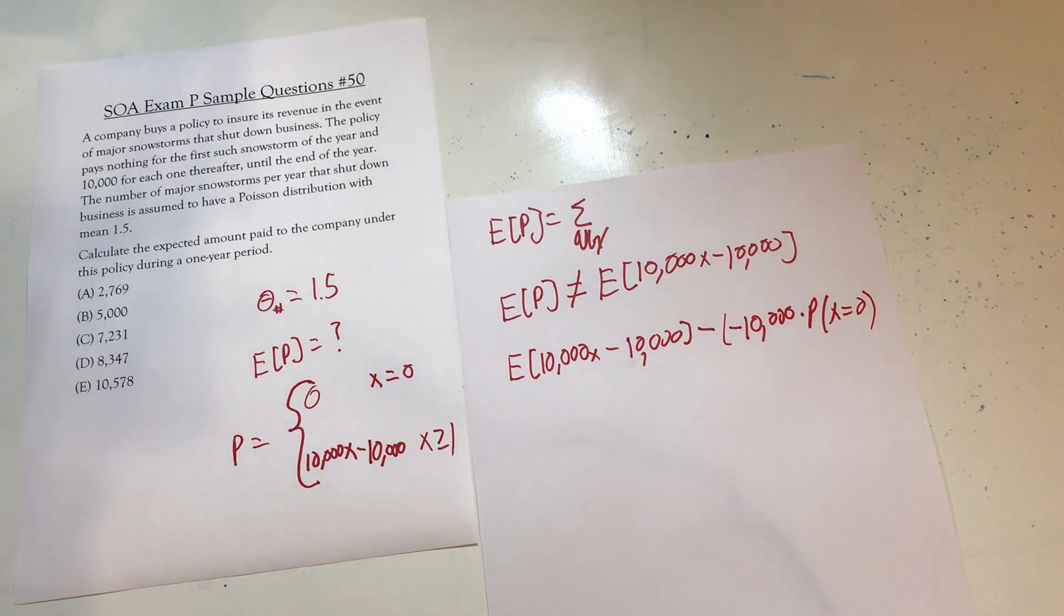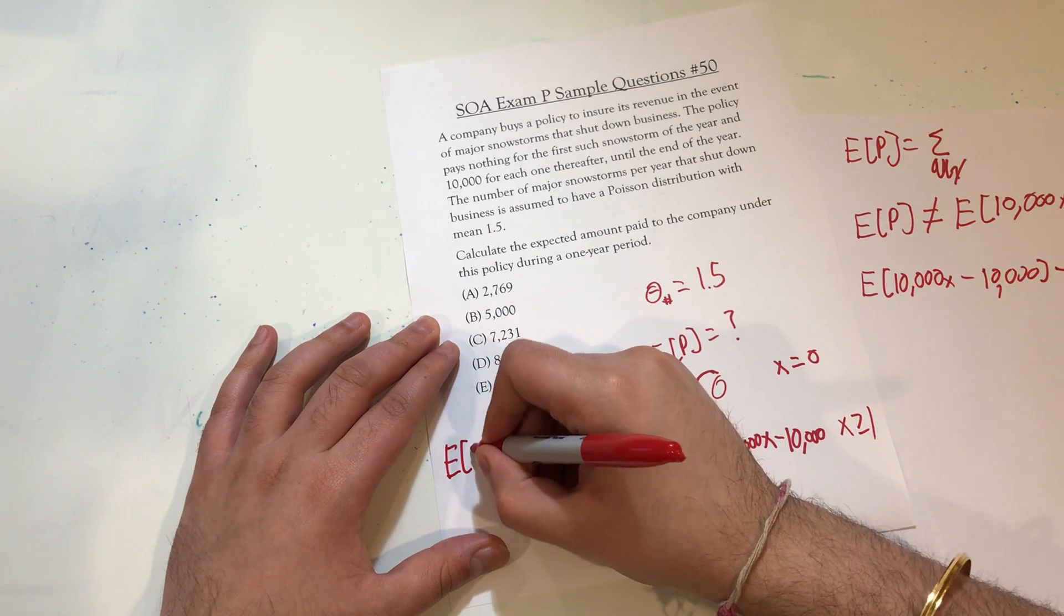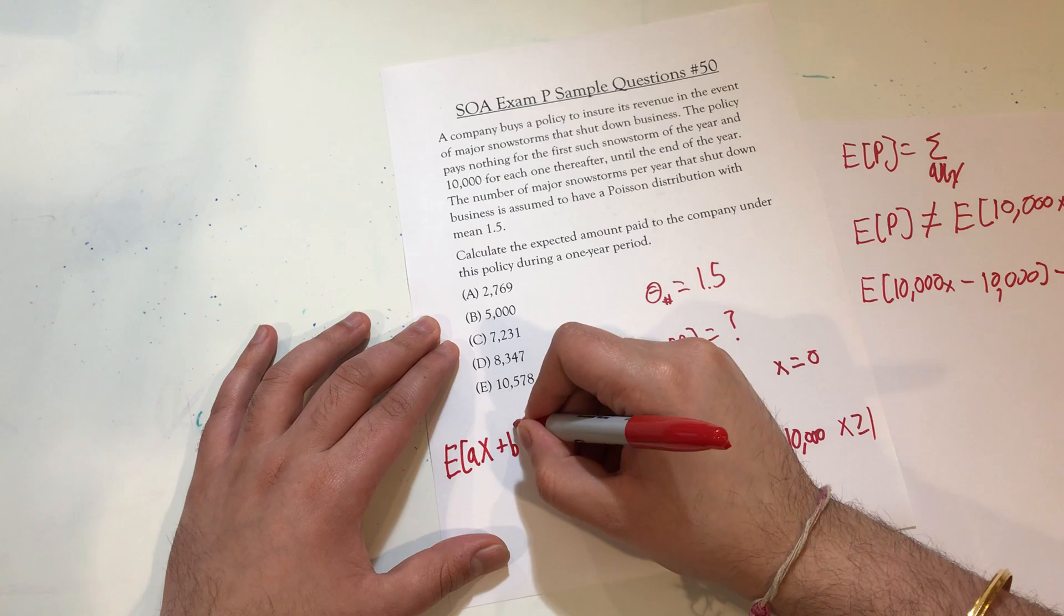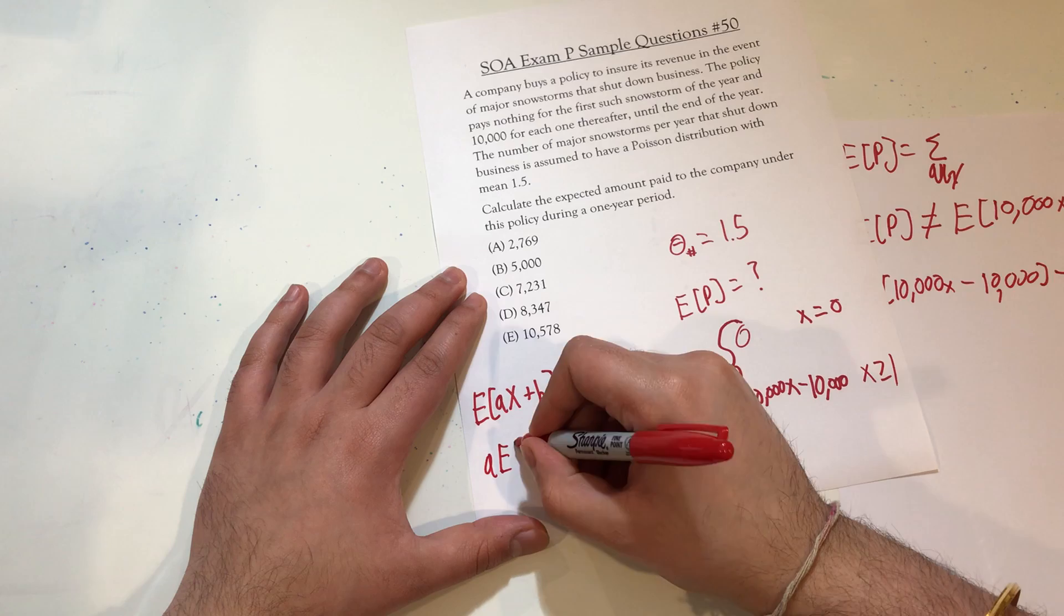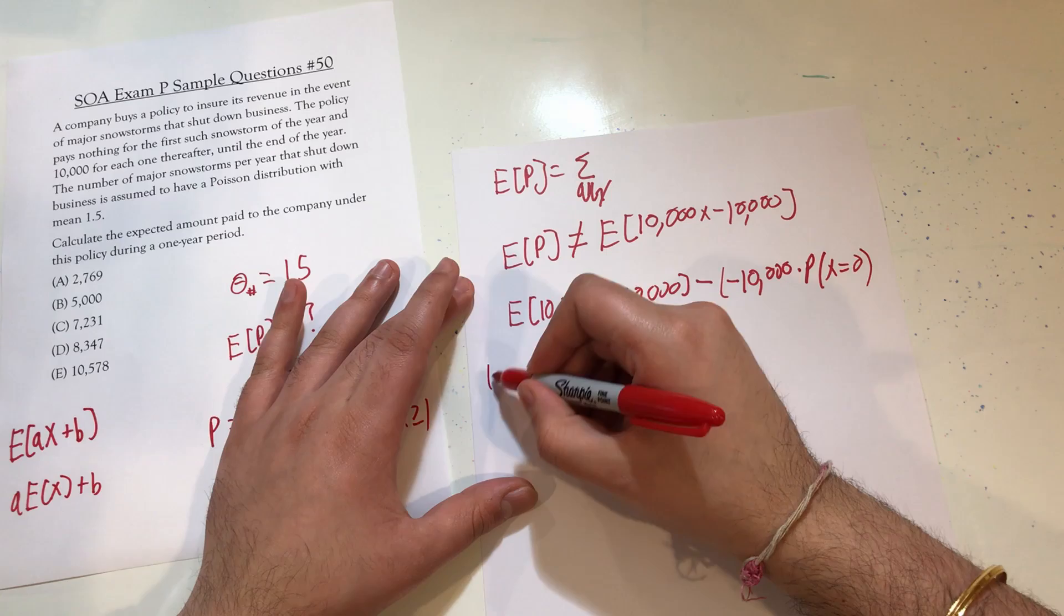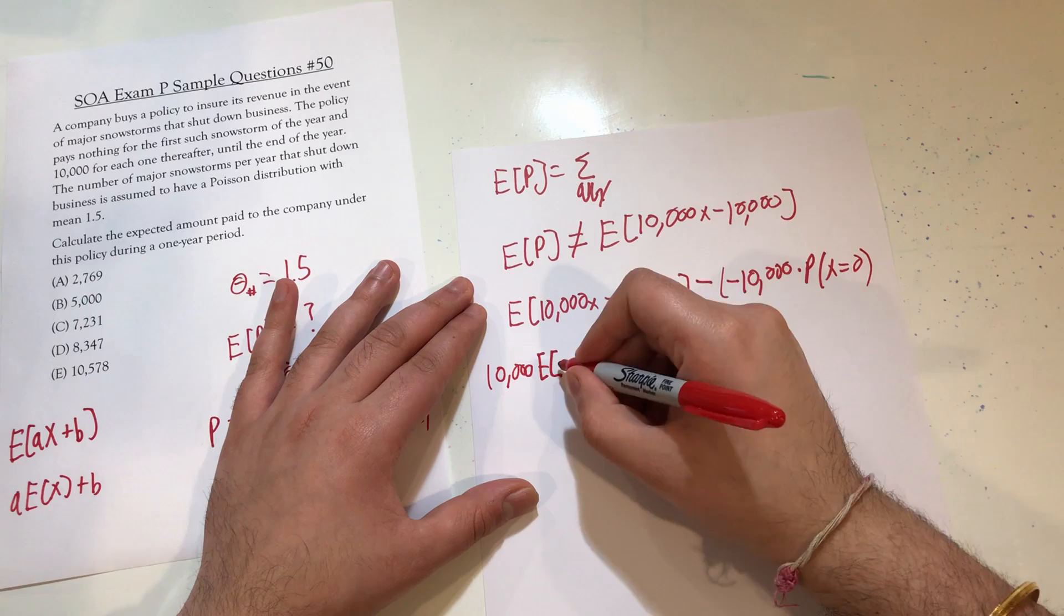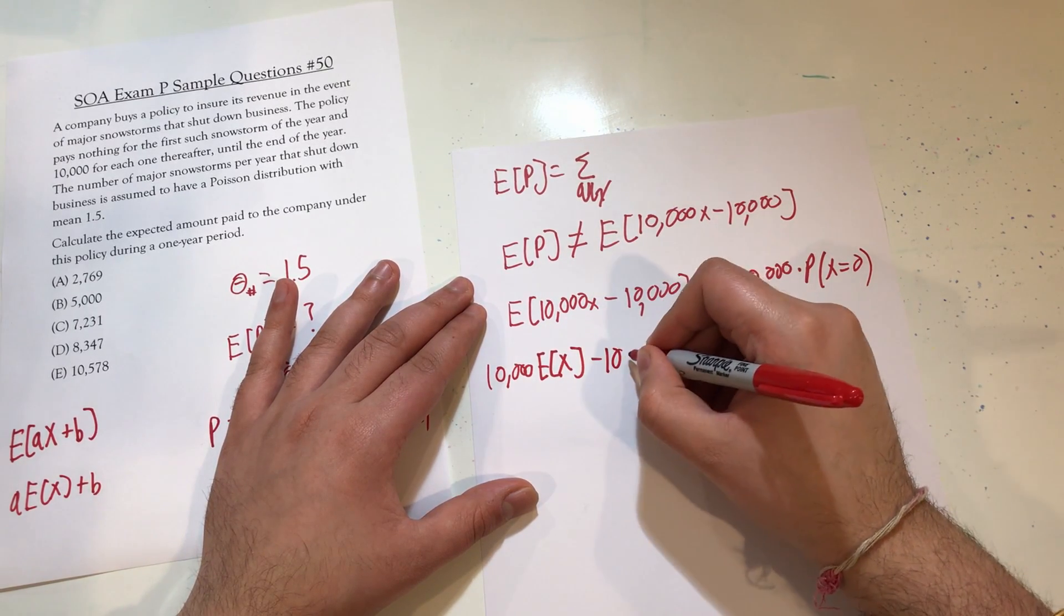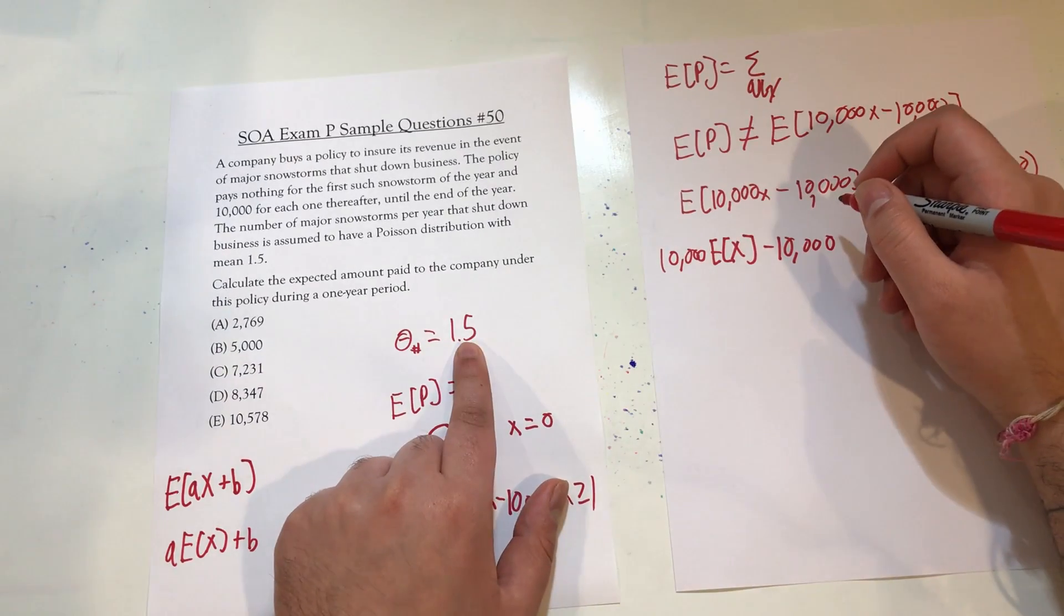Once we figure out how to set this up, it's all about just doing some arithmetic. A couple of things need to be understood about an expected value. The expected value of ax plus b, where a and b are constants, equals a times the expected value of x plus b. I'm going to use that same thing here. That's going to be 10,000 times the expected value of x minus 10,000. And we know the expected value of x. That's 1.5.